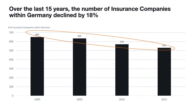'Over the last 15 years, the number of insurance companies within Germany declined by 18 percent.' You would use this action title if you want to focus your audience's attention on the overall trend throughout the years.